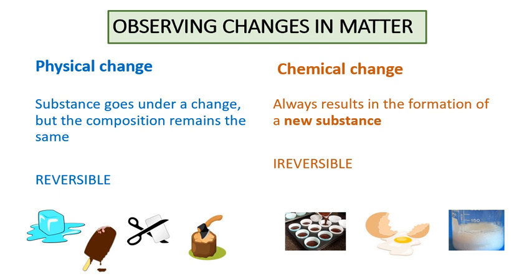A physical change happens when a substance goes under a change but its composition remains the same. It is reversible. A chemical change, on the other hand, always results in the formation of a new substance. It is irreversible.